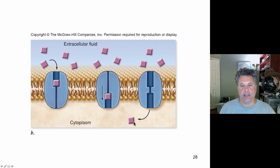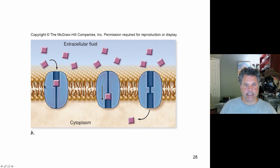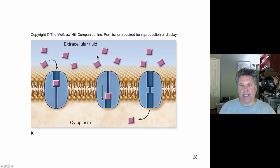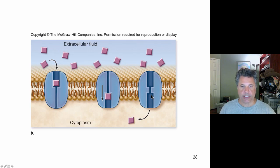High concentration outside, low inside — the molecule binds to the extracellular side, is somehow transported to the inside of the intracellular domain where it is released. This is an example of a carrier protein. No energy is being put into this. Simply the thermodynamic force of a molecule wanting to flow down its concentration gradient is the only force required. No input of energy by the cell is required in this case.